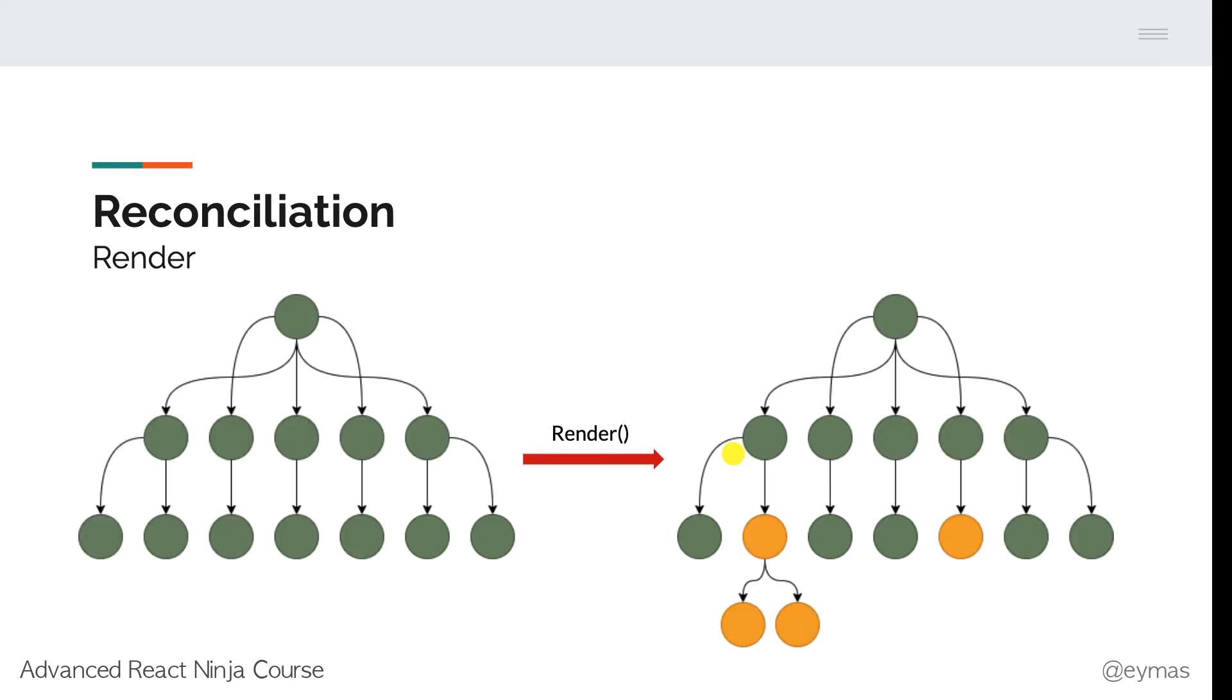So let's say this is our render - we created a new Virtual DOM tree. After creating a new Virtual DOM, React will start the diffing algorithm where React decides which DOM changes to make.